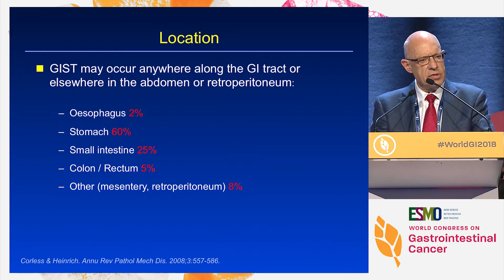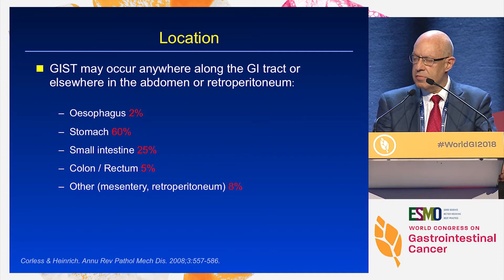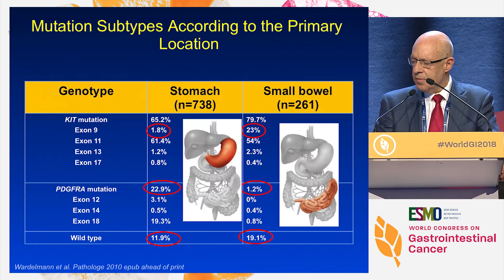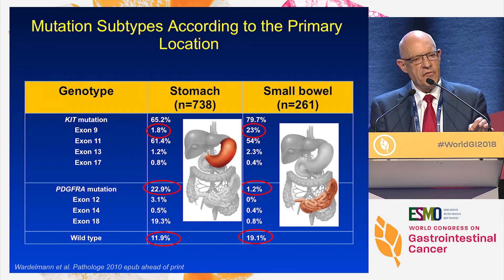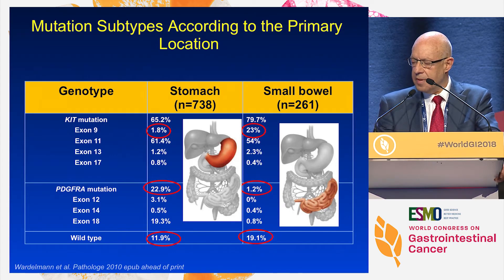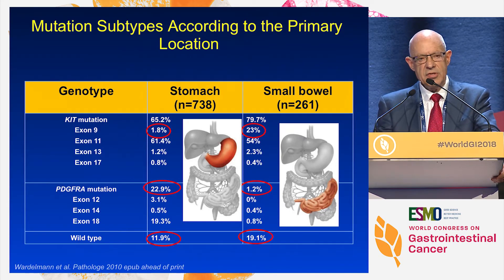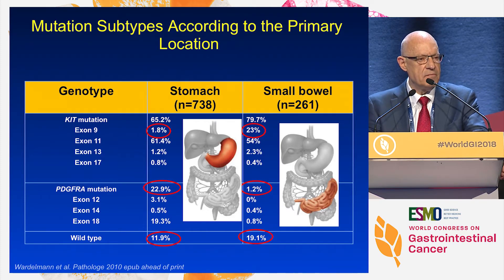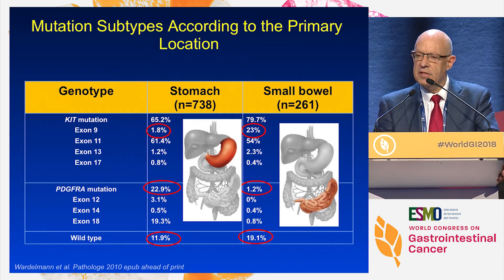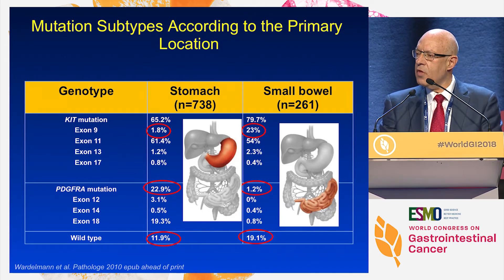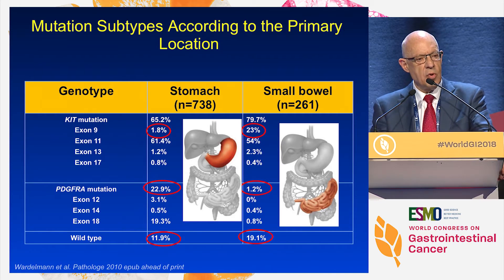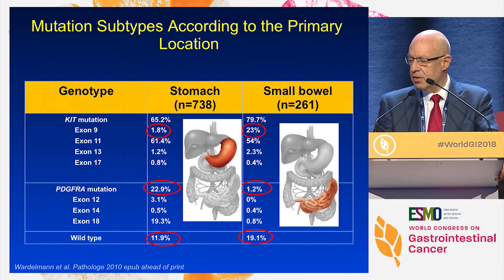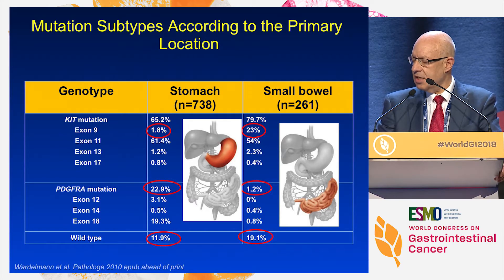GIST can occur anywhere throughout the GI tract, although the majority occur in the stomach. This slide reminds you that you can't tell from the location alone how the patient's going to behave. In gastric GIST, exon 9 mutations are less common than in small bowel GIST, where they may account for 23%. In gastric GIST, almost a fifth of patients will have PDGFRα abnormalities, and a number of those will be resistant to imatinib and don't require any treatment. It's really important to test for mutations in this condition.